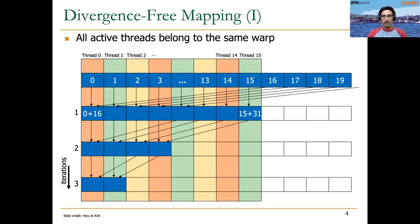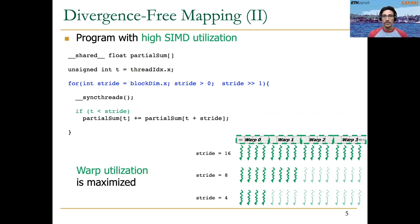Remember that writing code for an efficient parallel reduction requires us to map data to the active threads in a divergence-free manner. If we do it that way, as iterations make progress and threads start retiring, we maintain threads belonging to the same warp all active. This way, we can maximize warp utilization, which is key to obtaining a high-efficiency parallel reduction.